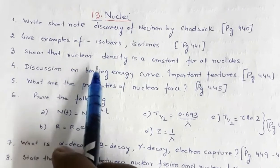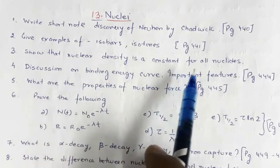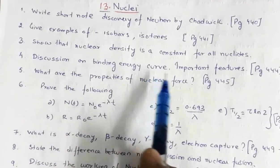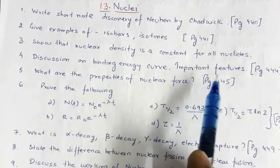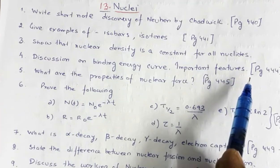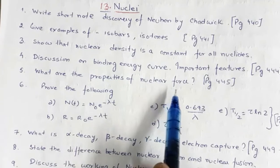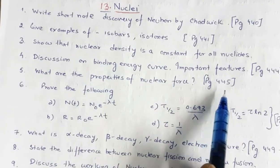Next is show that nuclear density is a constant for all nuclei. Discussion on binding energy curve and what are the important features of binding energy curve. So this is given in page number 444. What are the properties of nuclear force? This is given in page number 445.